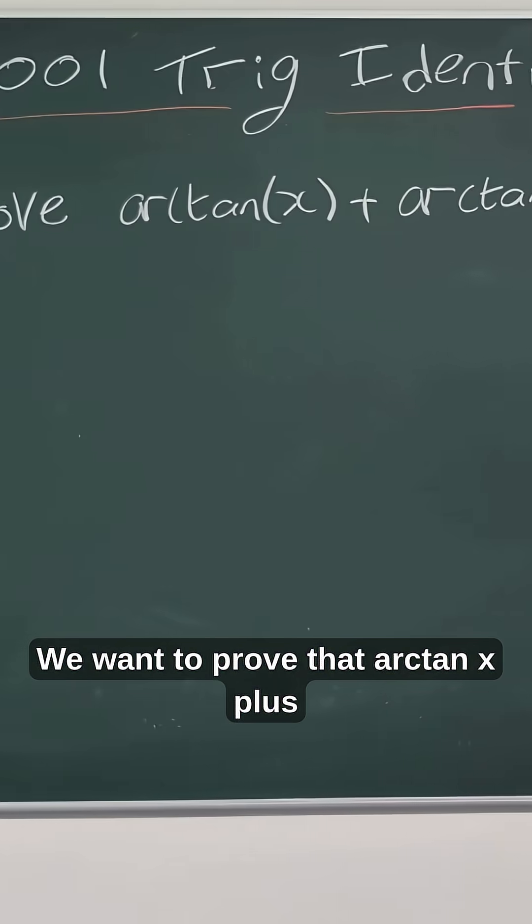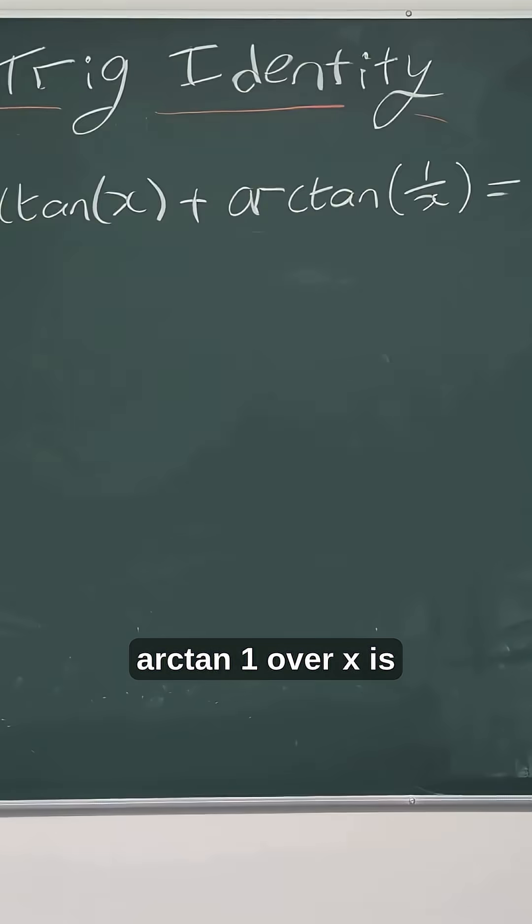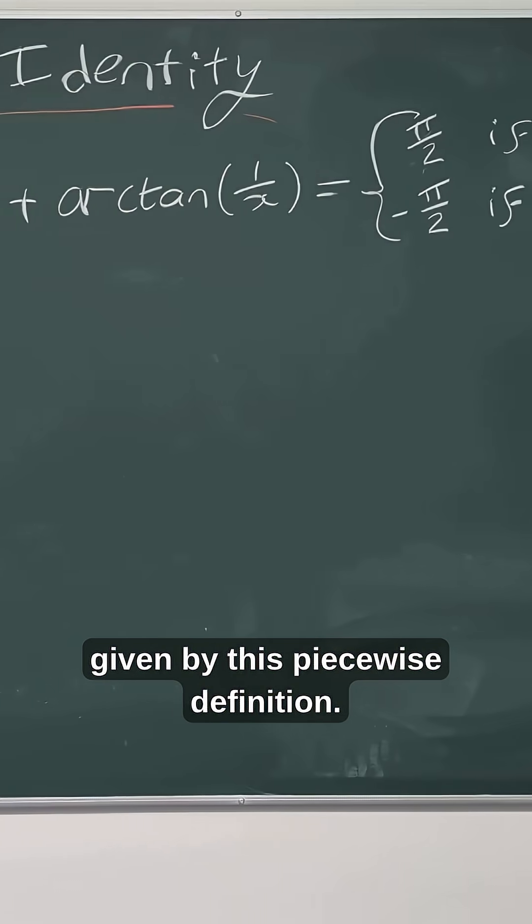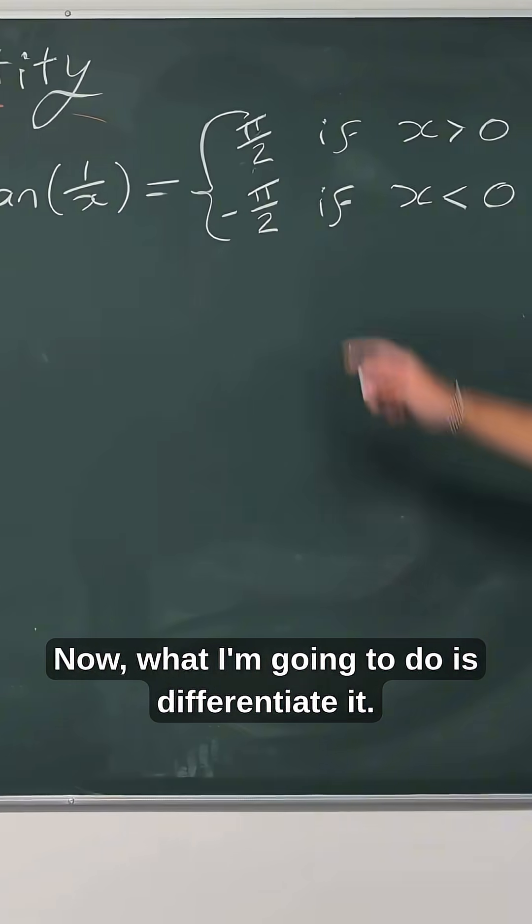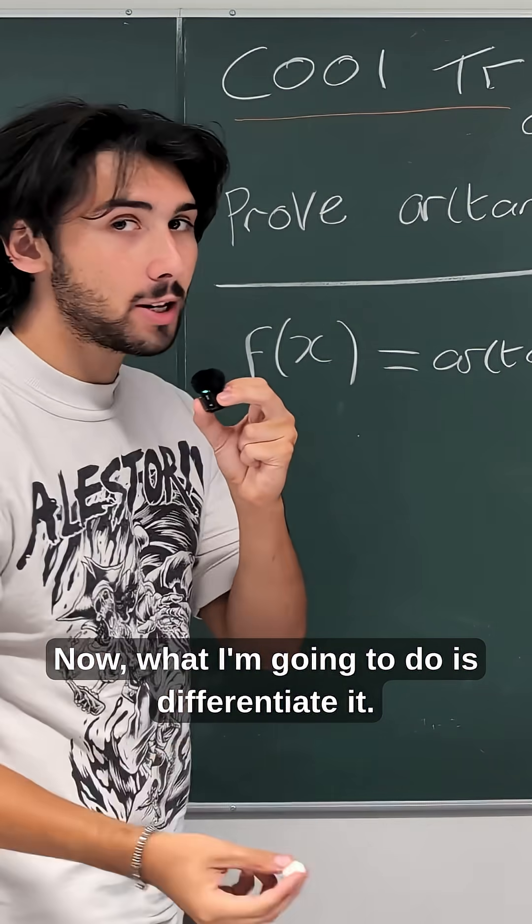We want to prove that arctan x plus arctan 1 over x is given by this piecewise definition. What I'm going to do is differentiate it.